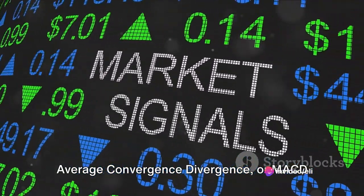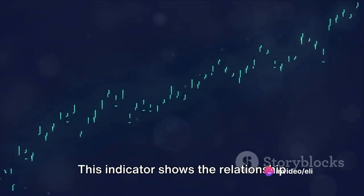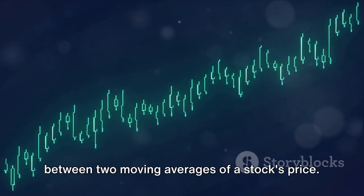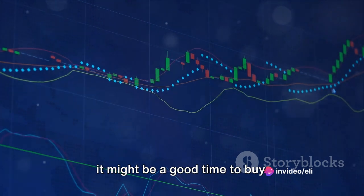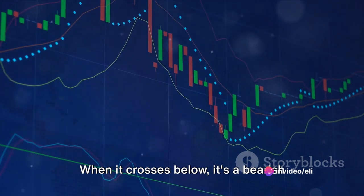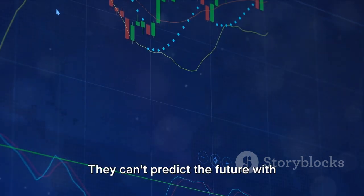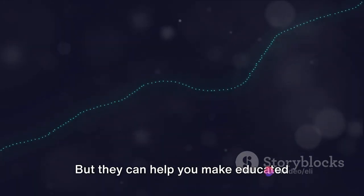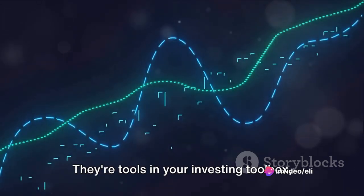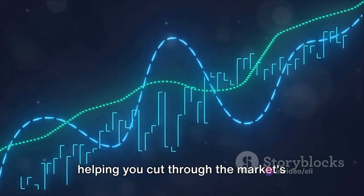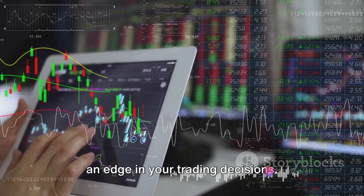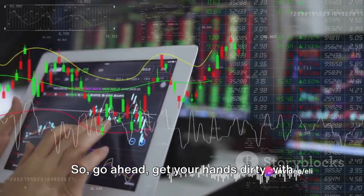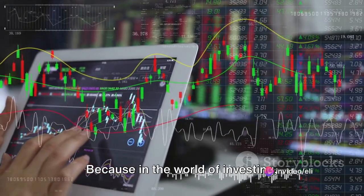Lastly, let's talk about the moving average convergence divergence, or MACD for short. This indicator shows the relationship between two moving averages of a stock's price. When the MACD crosses above the signal line, it's a bullish signal that suggests it might be a good time to buy. When it crosses below, it's a bearish signal that might indicate a good time to sell. Remember, technical indicators are not crystal balls. They can't predict the future with absolute certainty, but they can help you make educated guesses about where the market might be headed. They're tools in your investing toolbox, helping you cut through the market's mysteries and make more informed decisions. Using technical indicators can give you an edge in your trading decisions. So go ahead, get your hands dirty with these indicators. Because in the world of investing, knowledge truly is power.